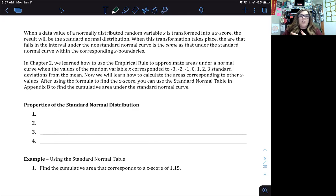So in chapter two we talked about the empirical rule between negative three and three standard deviations away from the mean. So now we're able to calculate the area for any x value other than negative three to three standard deviations. So after you use the formula to find the z score, you can use a standard normal table in appendix B to find the cumulative area under the standard normal curve.